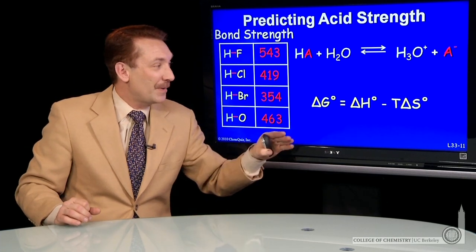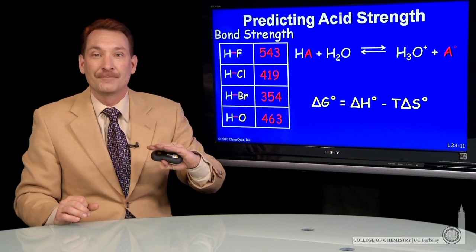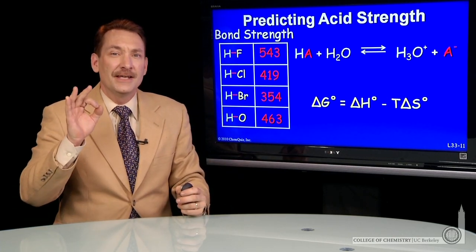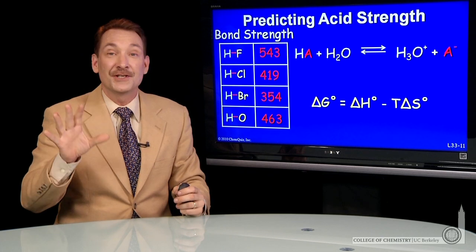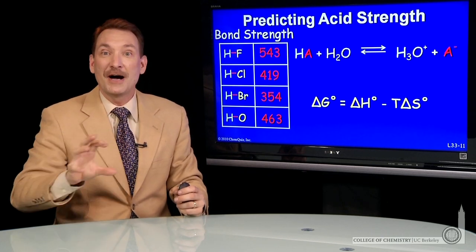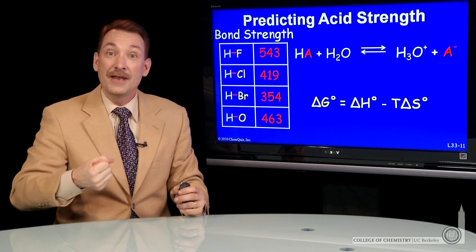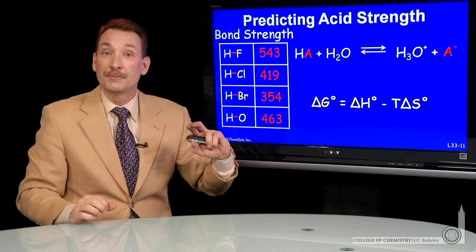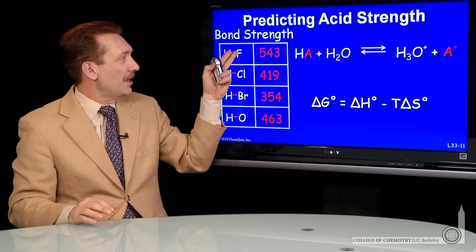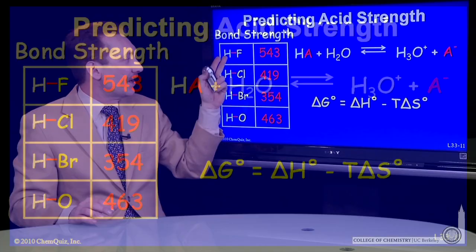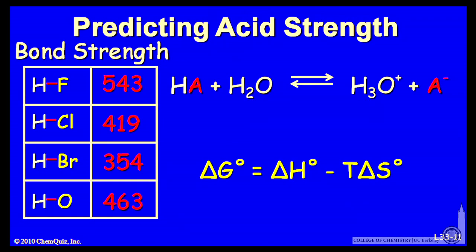So it's an entropic and an enthalpic term. But if all the entropic terms for a series of acids can be assumed to be about the same, then the enthalpic term would predominate. And that's more or less the case for the acids listed here: HF hydrofluoric acid, hydrochloric acid, and hydrobromic acid.